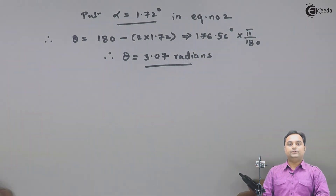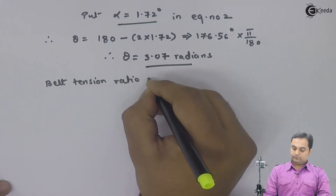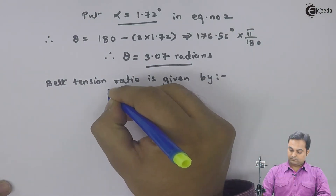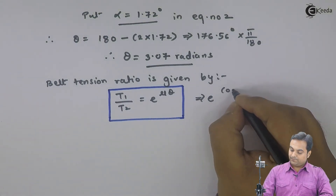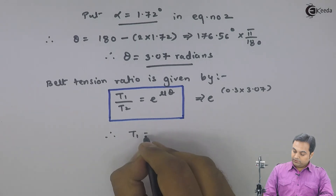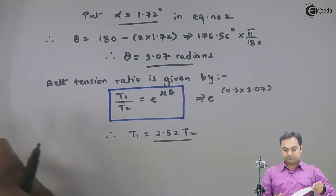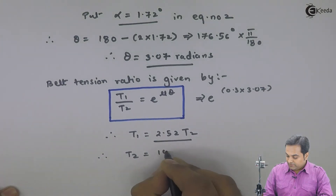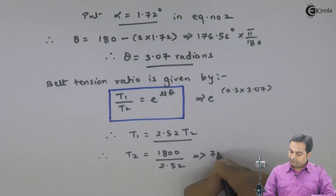After finding theta, I will use the belt tension ratio. The formula is T1 upon T2 equals e raised to mu theta. With mu equal to 0.3 and theta equal to 3.07, T1 equals 2.52 times T2. Since T1 was 1800 newton, therefore T2 equals 1800 divided by 2.52, which comes out to be 714.13 newton.